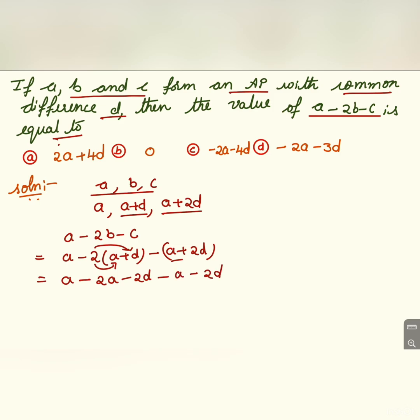Now if you simplify, A minus A will be cancelled and this is minus 2A and minus 2D minus 2D is equal to minus 4D.